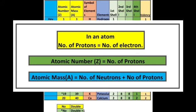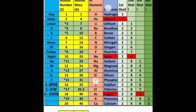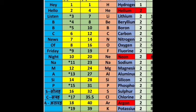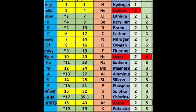Atomic mass is represented by the symbol A, and it is defined as the number of protons plus the number of neutrons — both of which are present in the nucleus. Now let's start. Here we have atomic numbers 1 to 20.